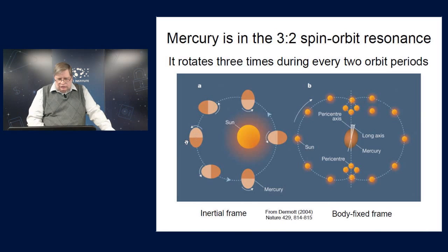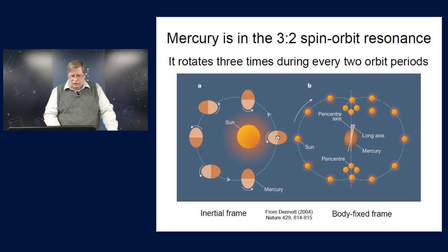So that means that by the time it's gone halfway around the sun, it's rotated three-quarters of the way around, and now its short axis is pointing towards the sun. And as it comes back around to perihelion again, it's rotated one and a half times, so now the opposite hemisphere is facing the sun from last time.